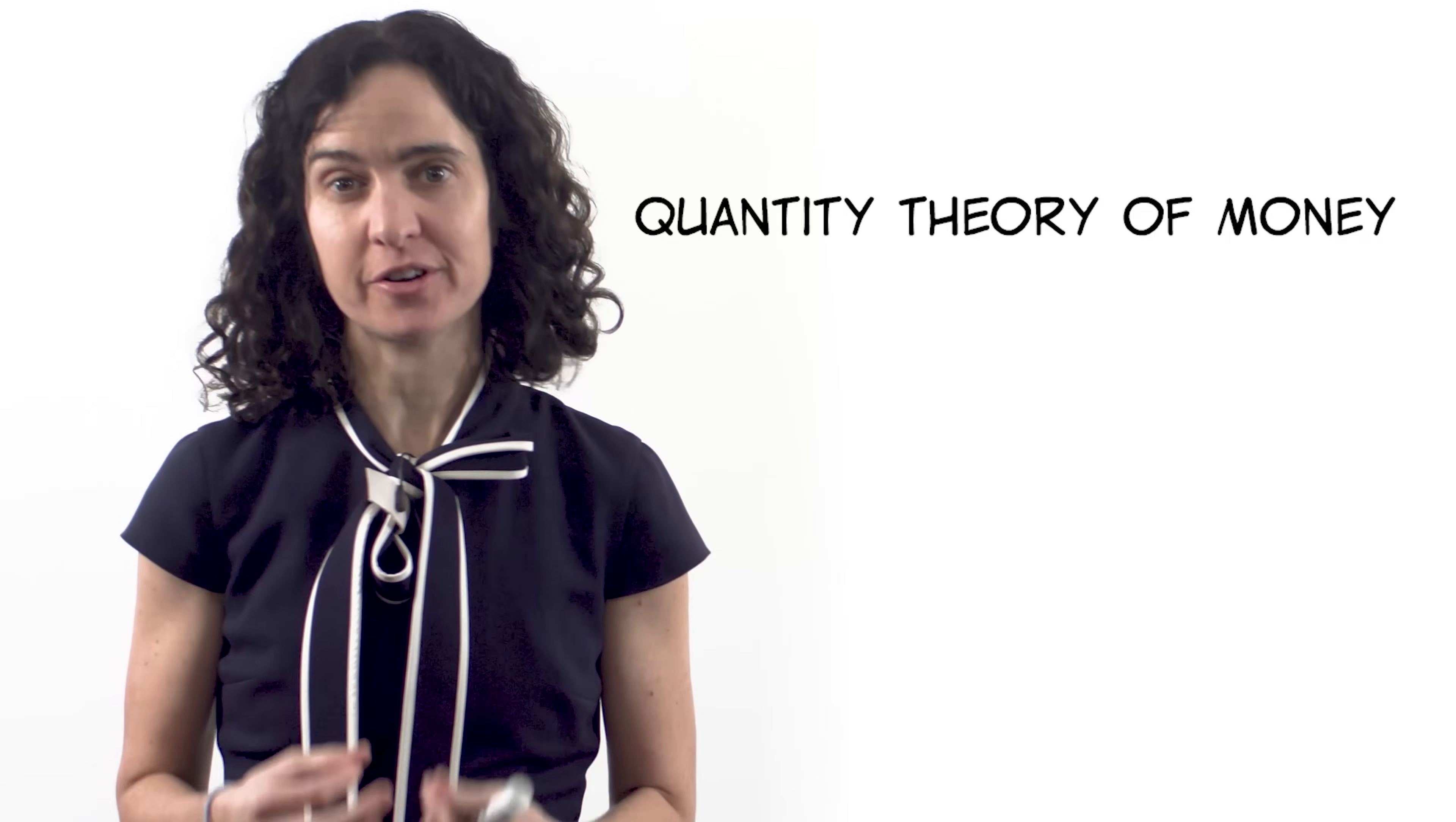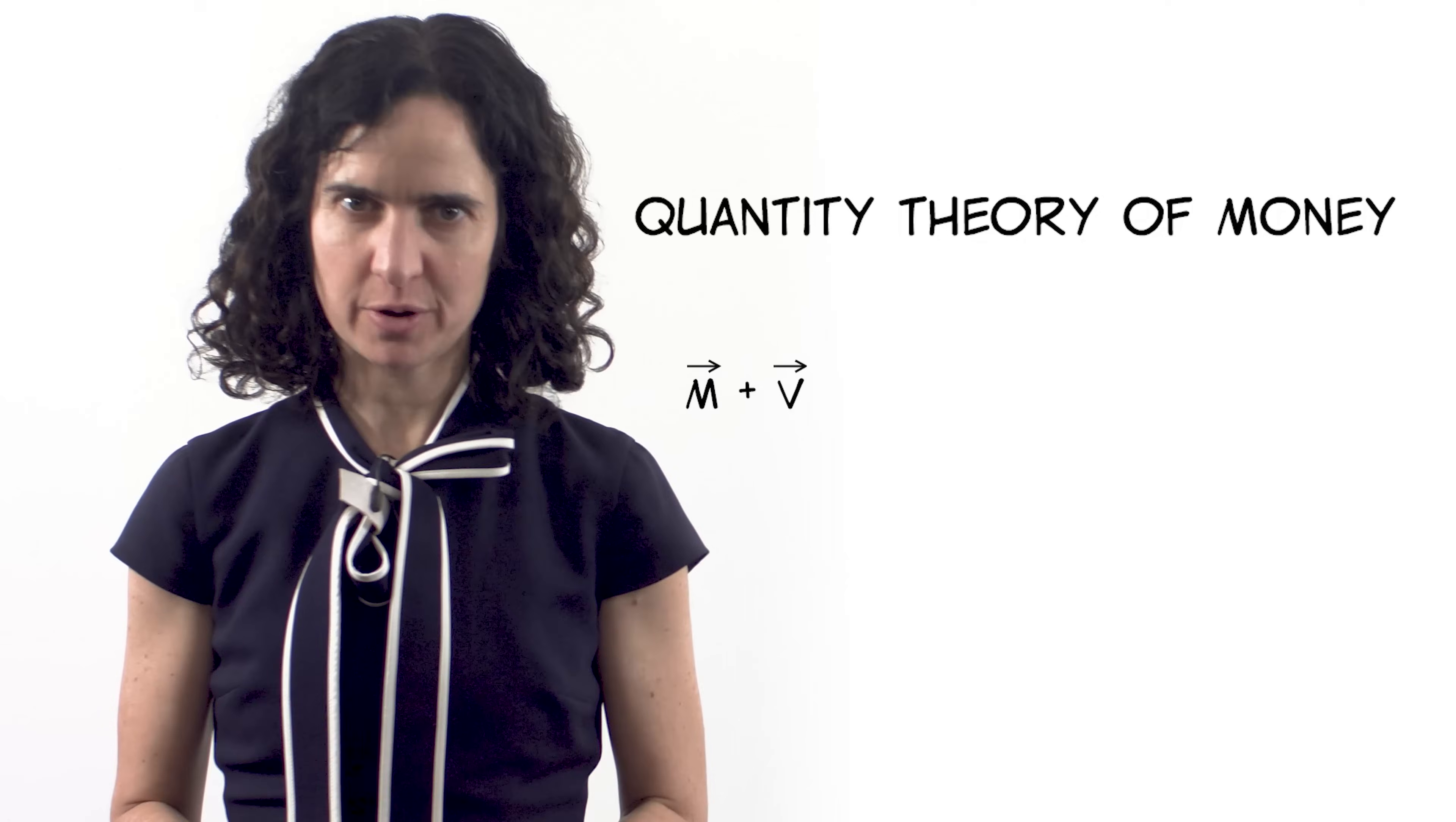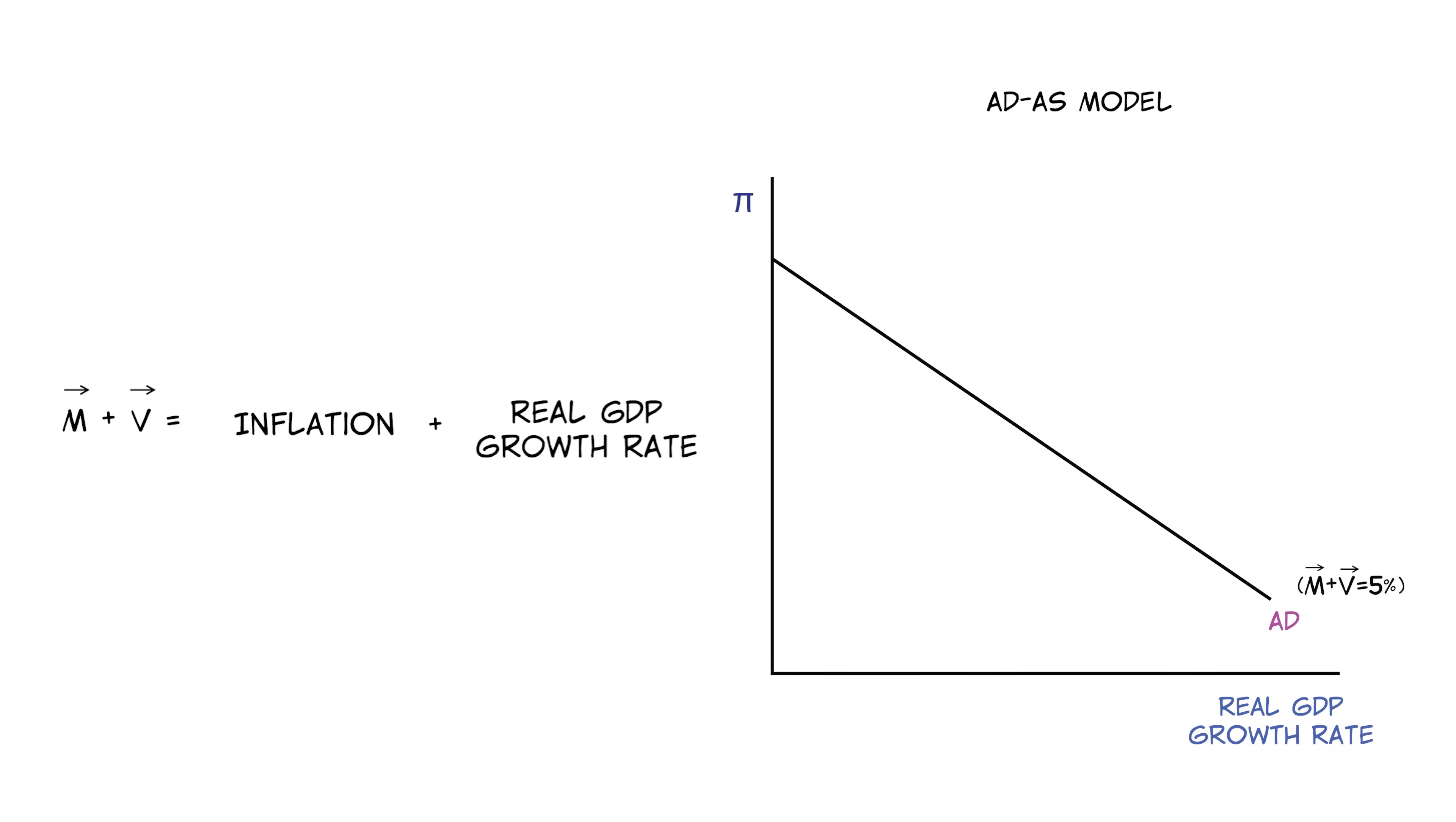Now let's derive the aggregate demand curve from the quantity theory of money. Recall that the money growth rate plus velocity growth rate equals inflation rate plus real GDP growth rate. The AD curve is all the combinations of the inflation rate and the real growth rate that add up to a constant amount.